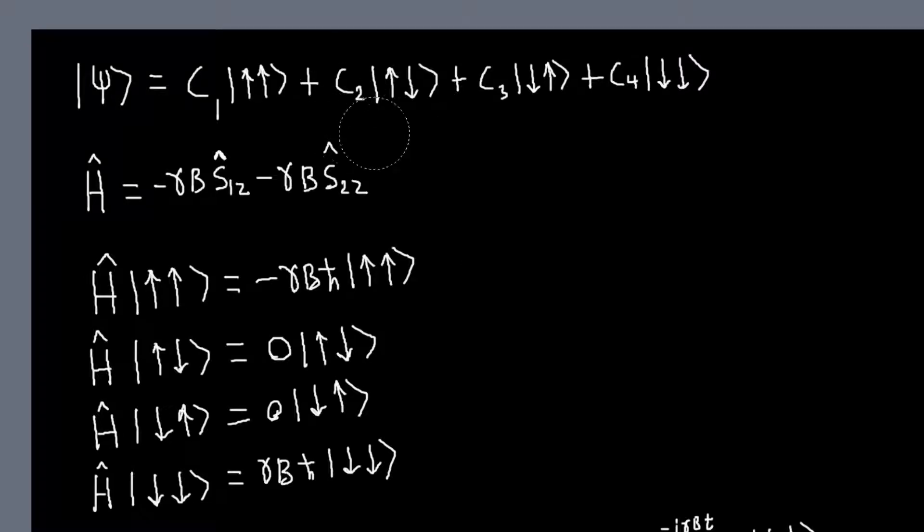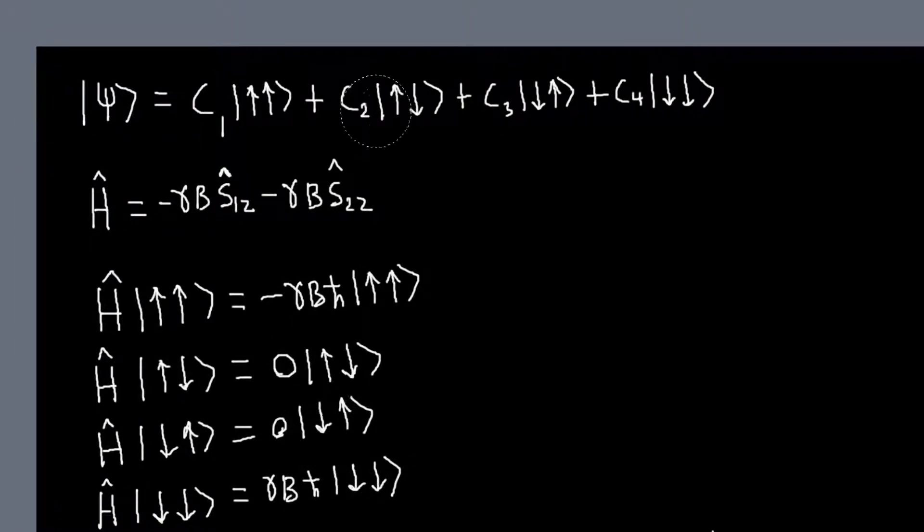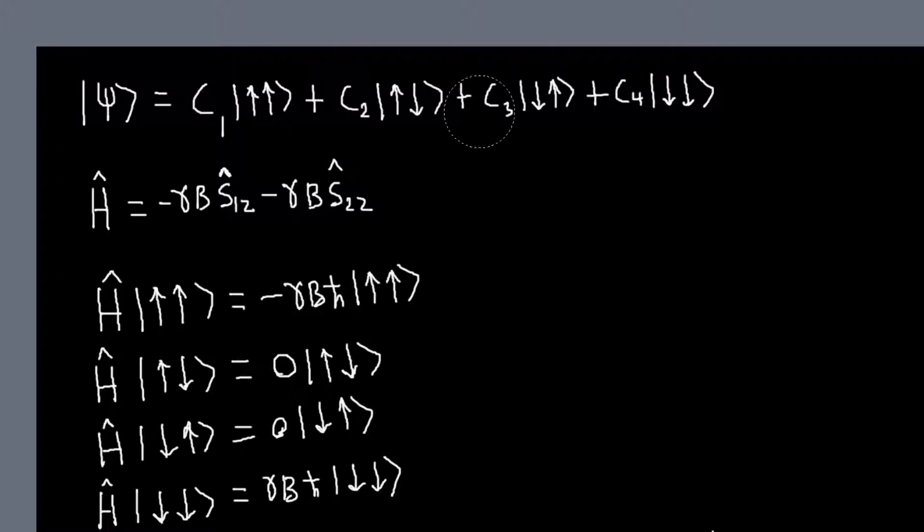So, that's really good, that our basis that we've expanded our state in is an eigenbasis, or they're all eigenstates of the Hamiltonian, because we can solve the problem immediately. All we have to do is say, this is our initial state, to get our state as a function of time, all we have to do is multiply it by the time evolution operator.